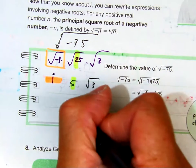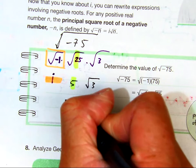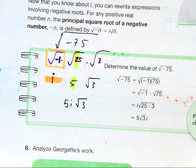How would I write my answer? I would write my answer like this: 5i radical 3.